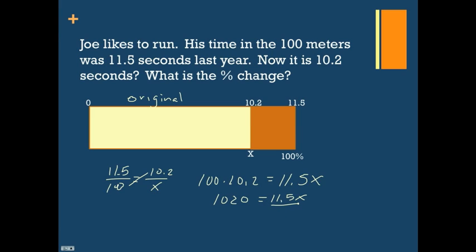Our next step then will be to divide by 11.5 on both sides, which will give us 88.69, which we'll just call 88.7. So our new percentage is 88.7%.